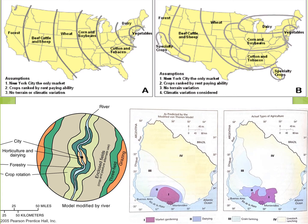Even after looking at these applications and examples, there are a few notes to leave you with. No model accounts for every variation that occurs in practice — for example, the United States has more than just New York City as a market. But this model is useful for studying the regional distribution of types of commercial agriculture. Von Thunen's underlying concern about the relationship between land use and transportation costs still explains many agricultural patterns today, and while improvements in transportation technology have reduced the applicability of the model, the focus on maximizing profits for commercial farmers is just as relevant today as it was in 1826.